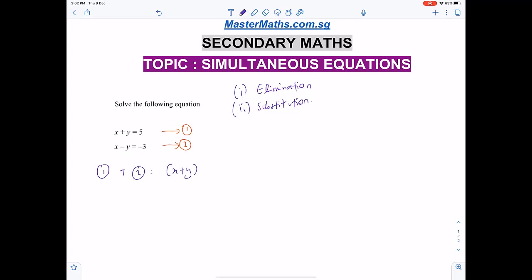X plus y plus x minus y equals 5 plus negative 3. When we remove the brackets: x plus y plus x minus y equals 5 minus 3, which is 2. Y minus y cancels out, so 2x equals 2. X equals 2 over 2, which is 1.